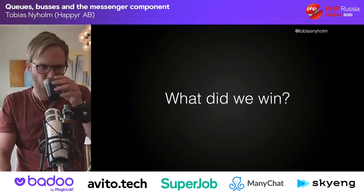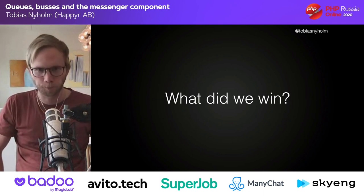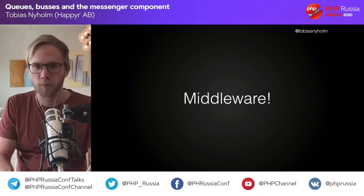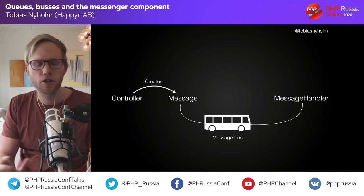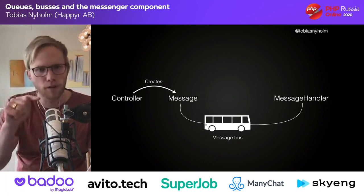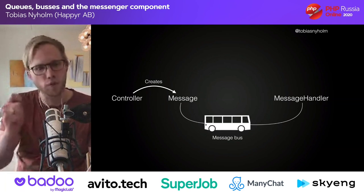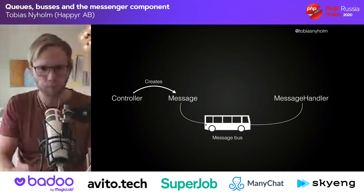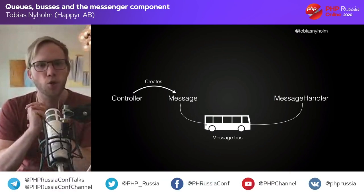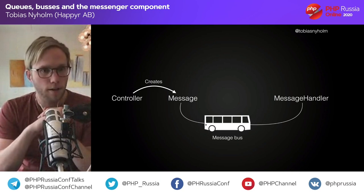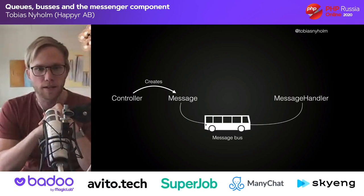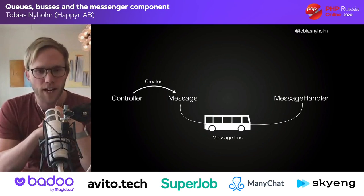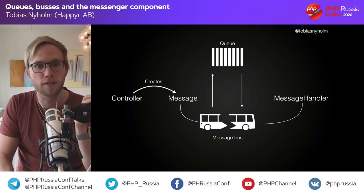Why couldn't we just call the message handler directly? The quick answer is middleware. We now have the possibility to add middleware — classes that the bus gives the message to before reaching the handler. You have your controller create a message, put it on the bus; the bus calls the first middleware, then the second, then third, and eventually your message comes to the message handler. You can have middlewares for logging, validation, transactions, and — more importantly for this talk — middleware for queues.